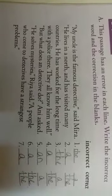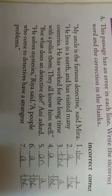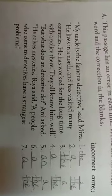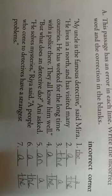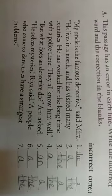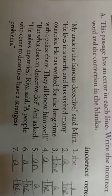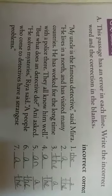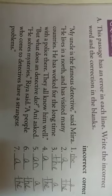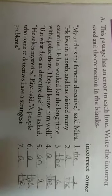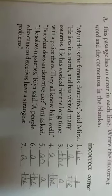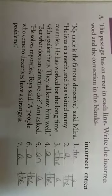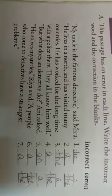'But what does an detective do Annie asked' — 'an' is incorrect. 'Detective' begins with a consonant, so it should start with 'a,' not 'an.' One detective — 'D' is a consonant so you should use 'a.' Write 'an' as incorrect and 'a' as correct.